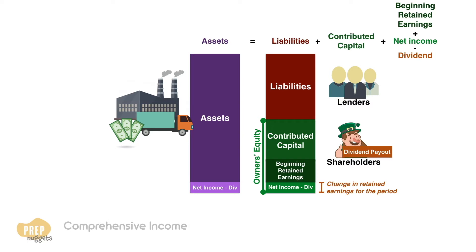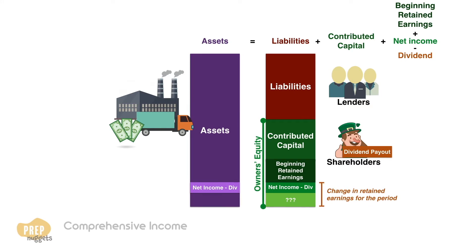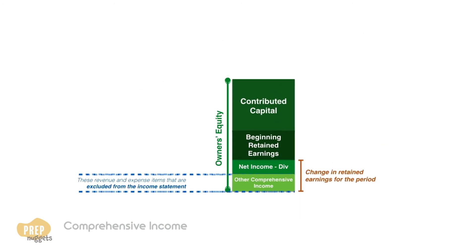However, there are times when this is not the case. This is because there are certain items of revenue and expense that are excluded from the income statement. These excluded items are known as other comprehensive income.